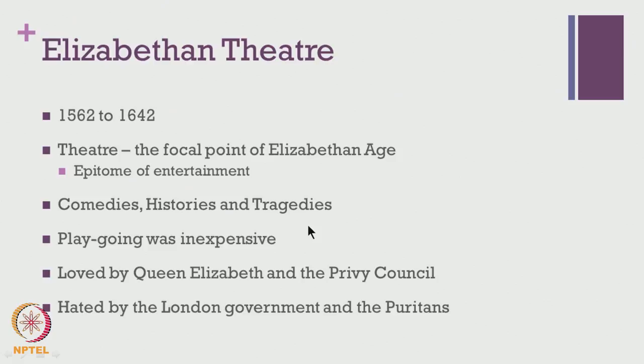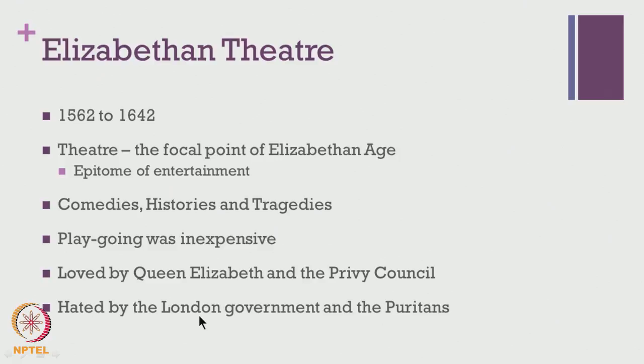There was another ironical thing about Elizabethan theatre that made it very special and of historical importance — it was almost like a double-edged sword. It was loved by the queen and the privy council and was a favourite of the court. Many playwrights were supported by the court, and Shakespeare himself enjoyed a lot of patronage and support from Queen Elizabeth. But at the same time, these playhouses and drama in general were hated by the Puritans and the London government, who feared law and order issues and the crowding that could make London a breeding ground for diseases, as plagues continued to attack until about the early 17th century.